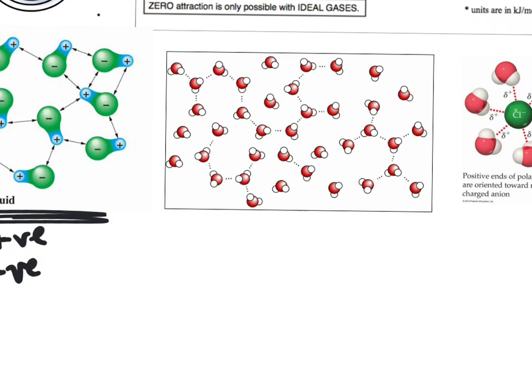So this figure is representing hydrogen bonding. Hydrogen bonding only occurs in certain molecules. The hydrogen has to be bonded to a nitrogen, an oxygen, or a fluorine. So here we're going to assume this is a water molecule. So we have H2O, two hydrogens bonded to an oxygen.